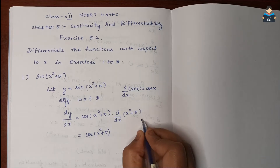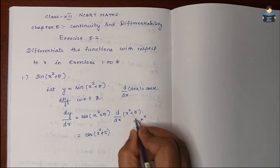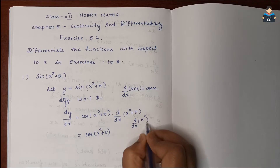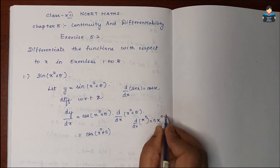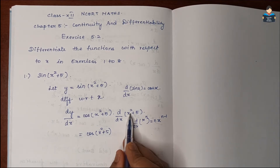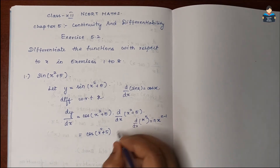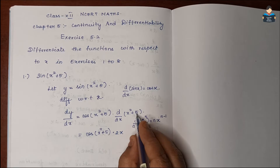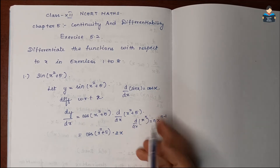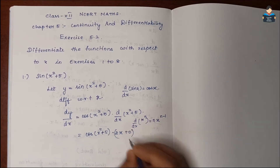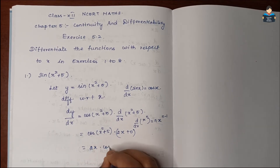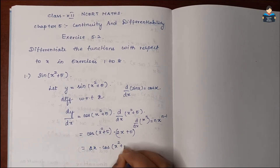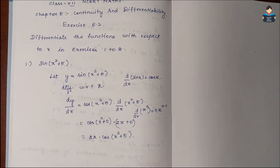Using the power rule, differentiation of x to the power n is n into x to the power n minus 1. So differentiation of x² is 2x, and 5 is a constant so its derivative is 0. Therefore dy/dx = 2x · cos(x² + 5). This is the answer for the first question.